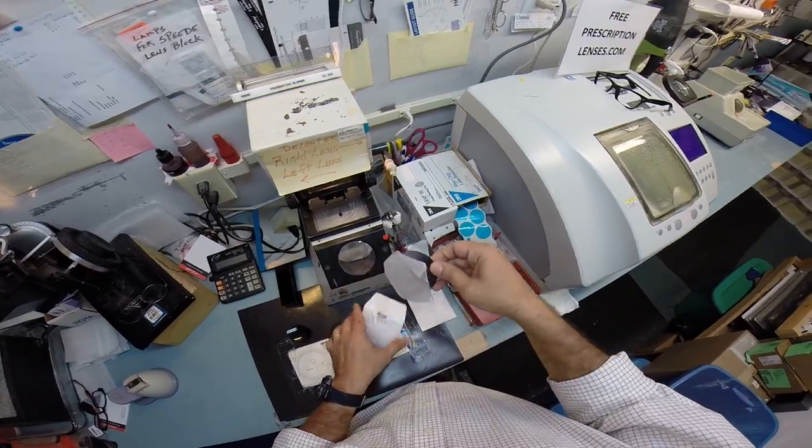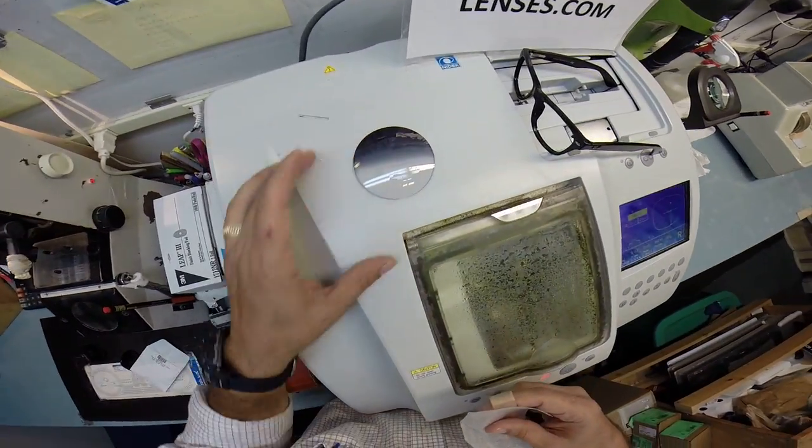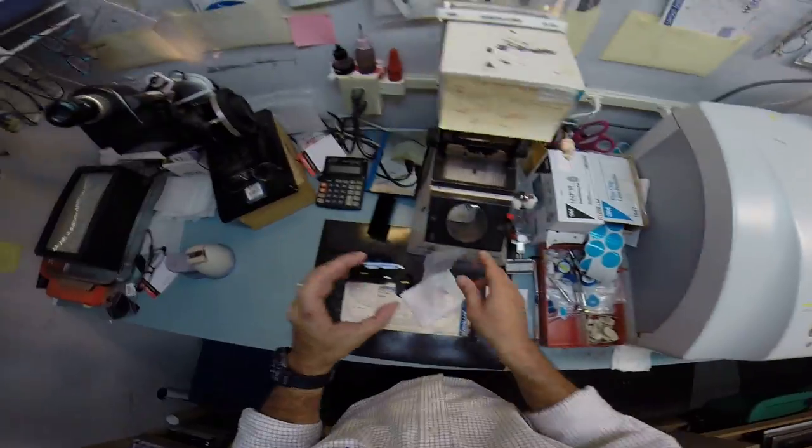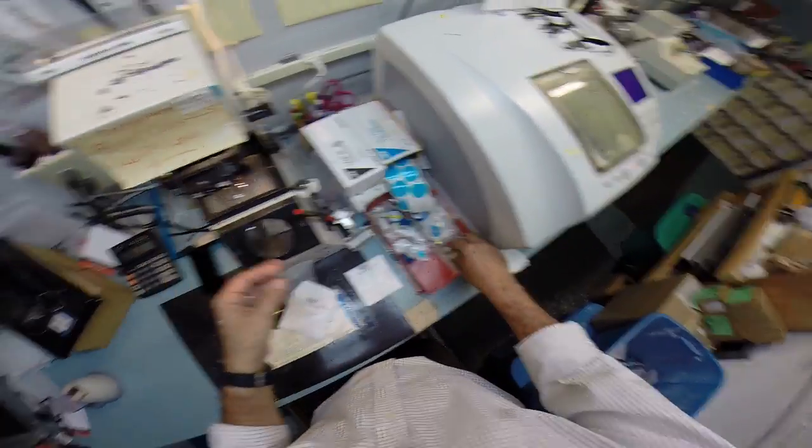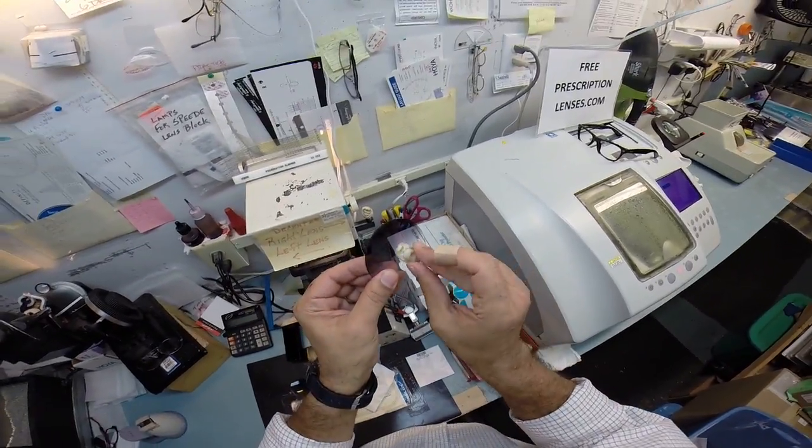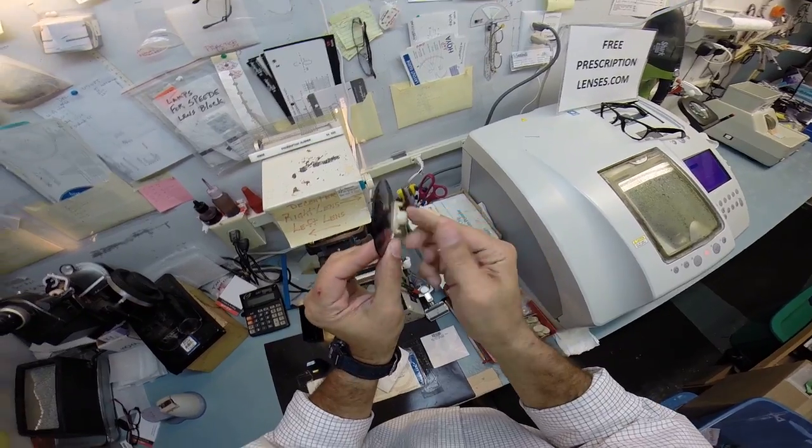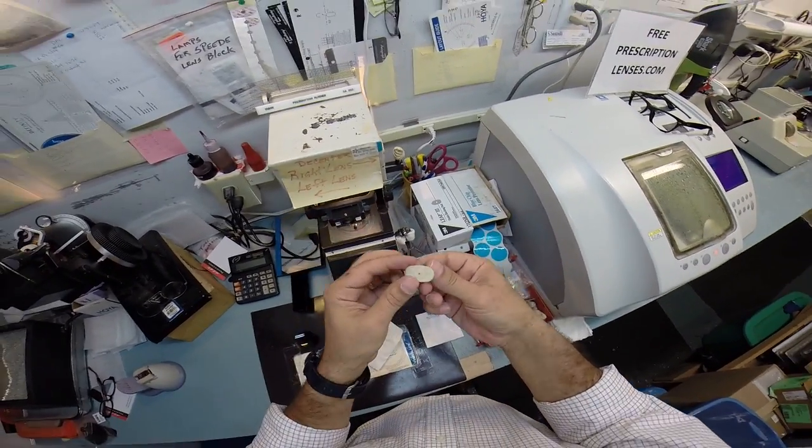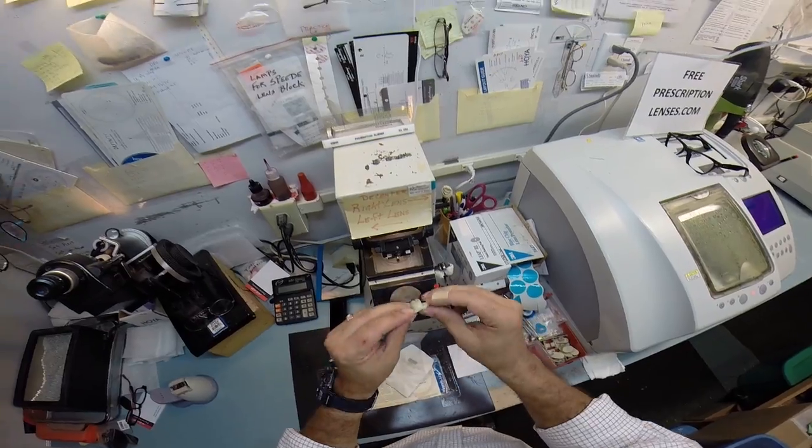These are your lenses. This is your right lens. The gradient lens that's going to go in there and the bottom is going to be clear where your bifocal is at. I'm going to put the lens there. This is a block. This is what I need to attach to your lens in order to cut it while it stays in the machine.